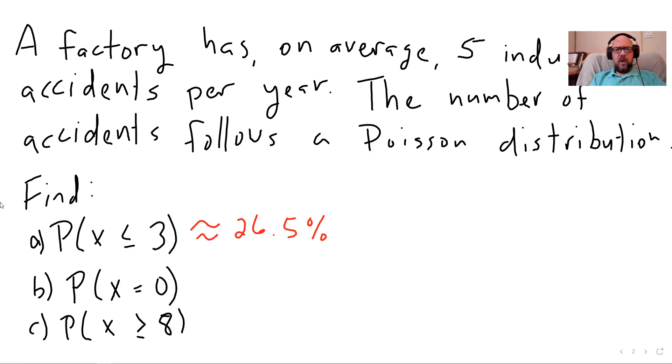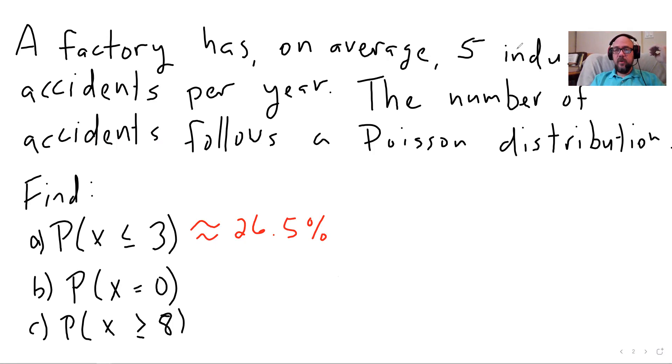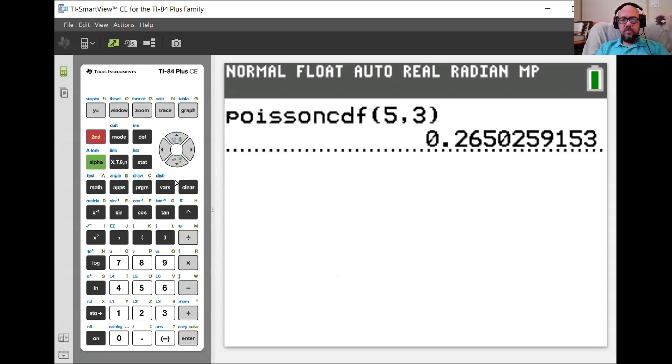All right. I want to find the probability that X equals zero, which I would interpret as there are no industrial accidents that particular year, right? That is an option. So let's see what we would get there. So here I want to use Poisson PDF because it's equals zero. So we're going to go to distributions, Poisson PDF.